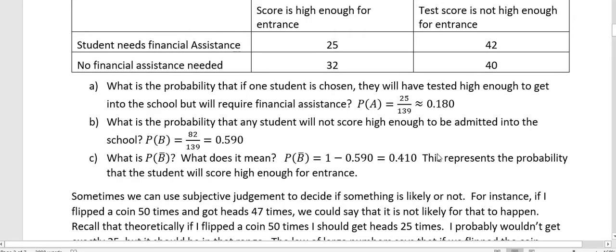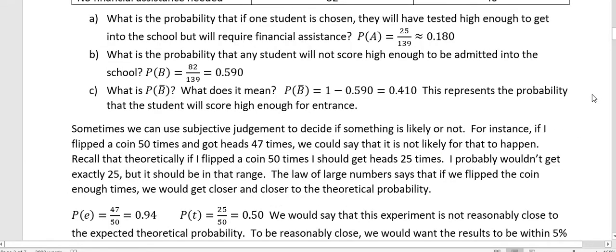Sometimes we can use subjective judgment to decide if something is likely or not. For instance, if I flipped a coin 50 times and got 47 heads, we could say that's not likely to happen. Recall that theoretically if I flipped it 50 times, I should get 25 heads, right? I probably wouldn't get exactly 25, but it should be in that range. If I'm getting 47, that's definitely not in the range of what I would expect.